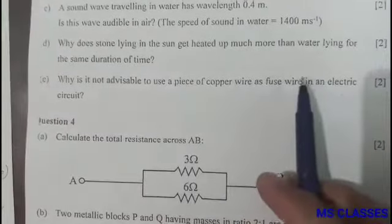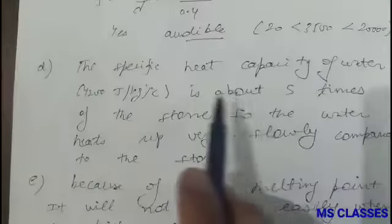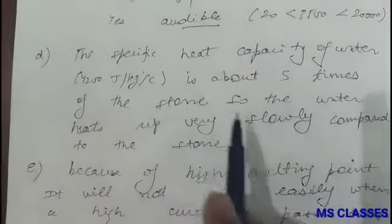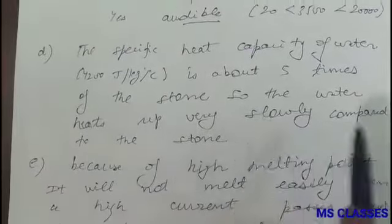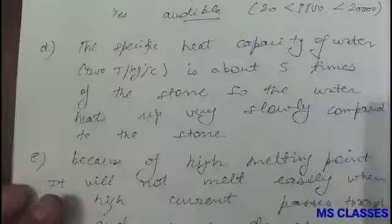Question 4(a): Why does a stone lying in the sun get heated up much more than water lying for the same duration of time? The specific heat capacity of water, which is 4200 joules per kg per degree Celsius, is about five times that of stone, so water heats up very slowly compared to stone.